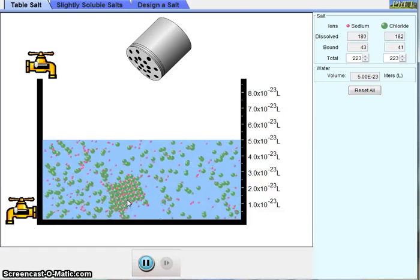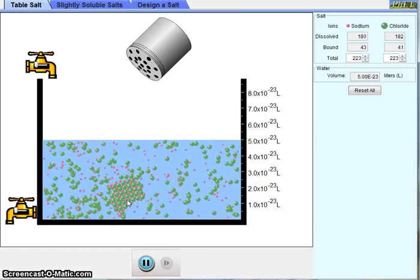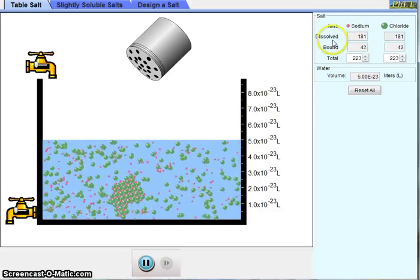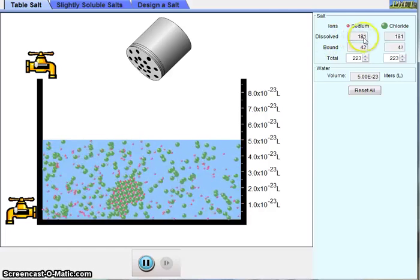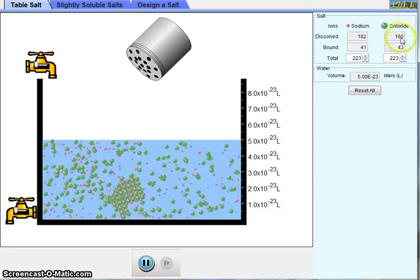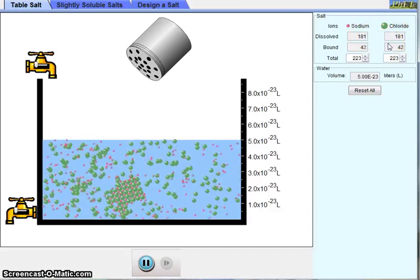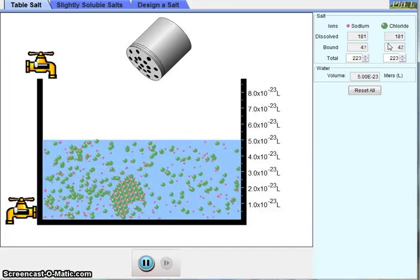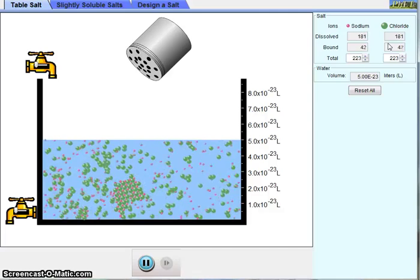Another thing that we can see, which is an important aspect of dynamic equilibrium, is that there's a balance which is being maintained. We can see that the number of dissolved sodium and chloride ions stays relatively constant. We see a bit of fluctuation from 180 to 181 and 182, but the overall average is staying the same over time.